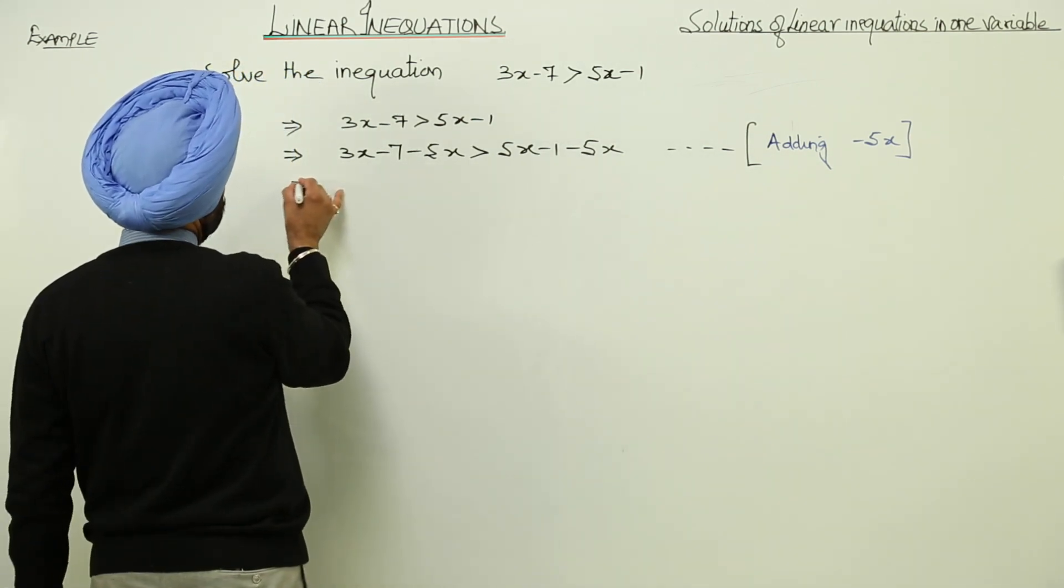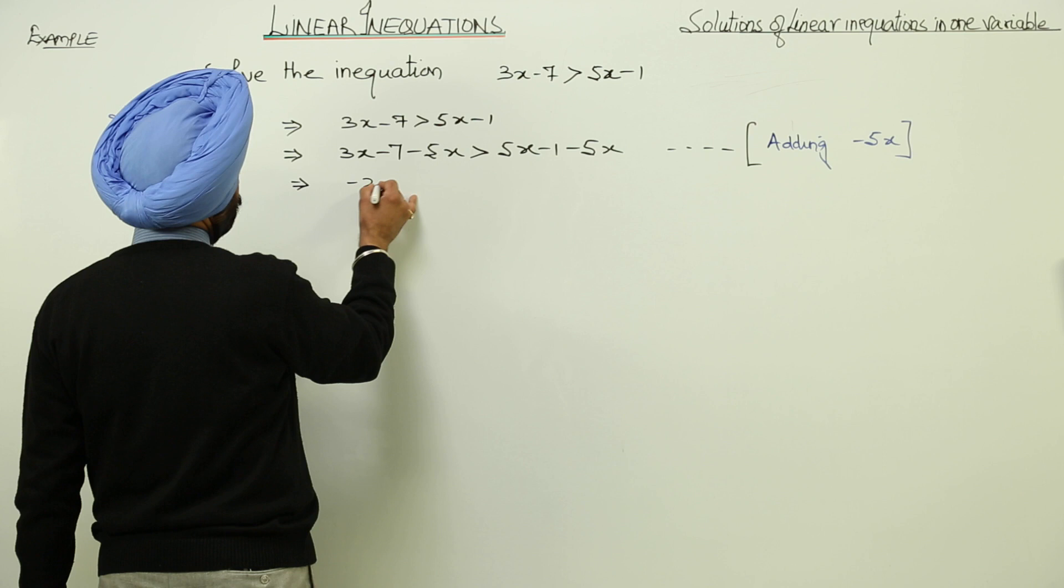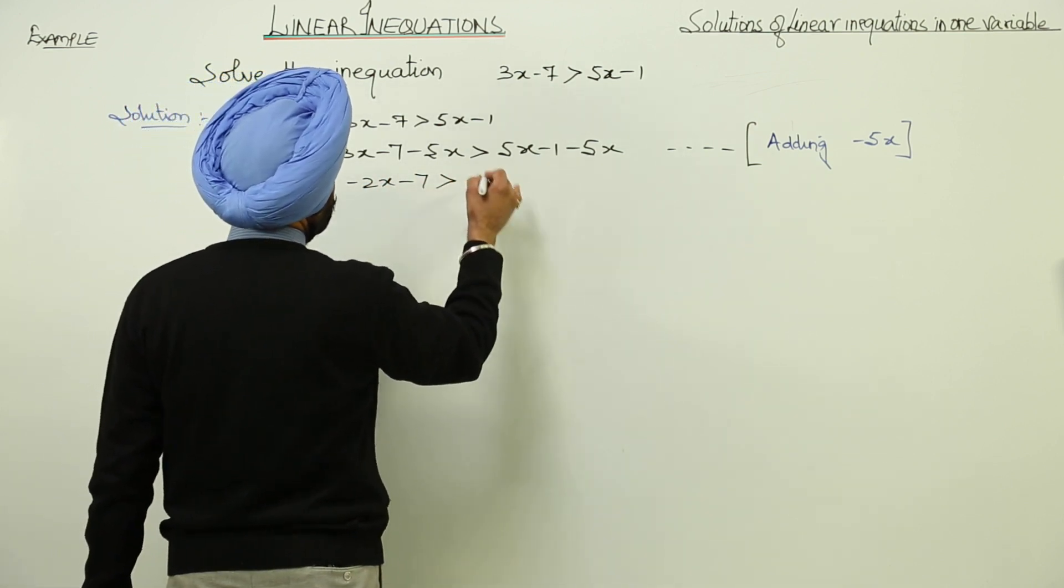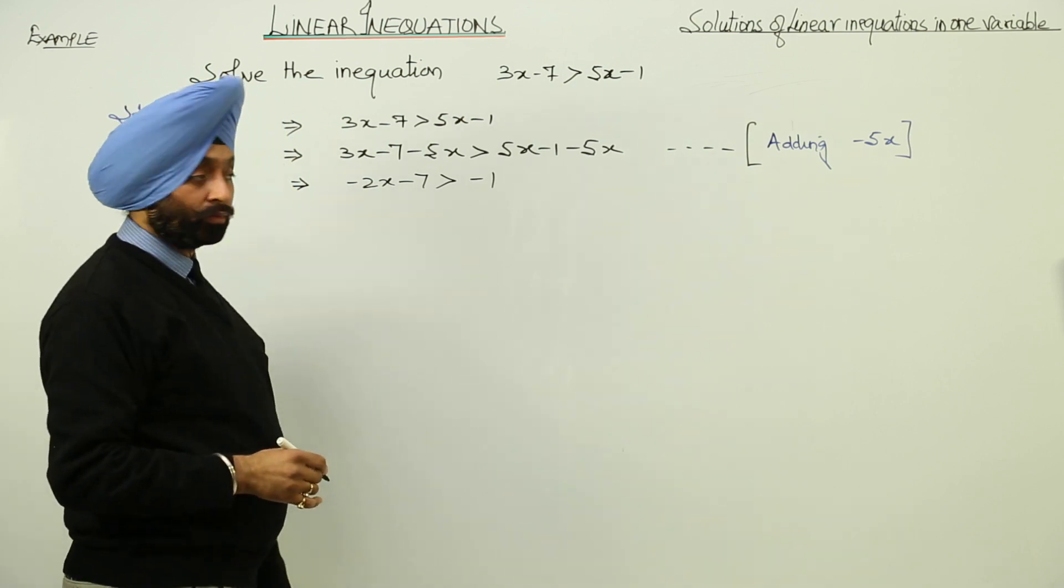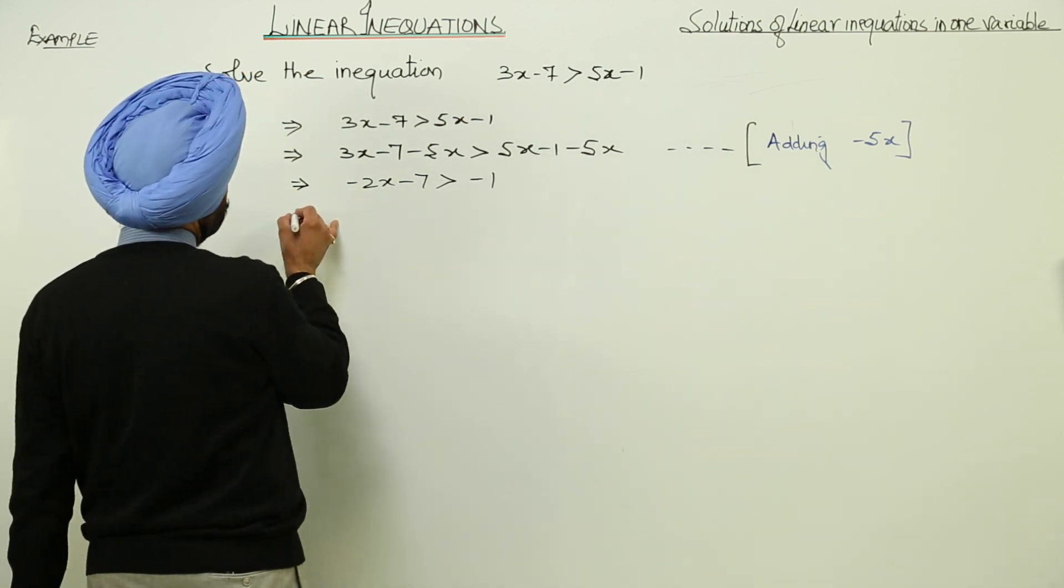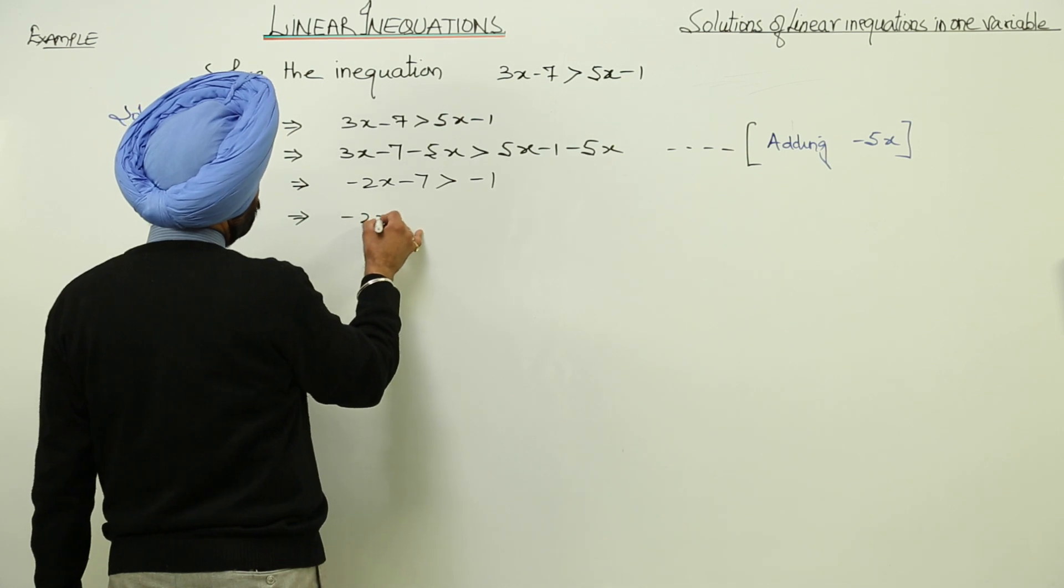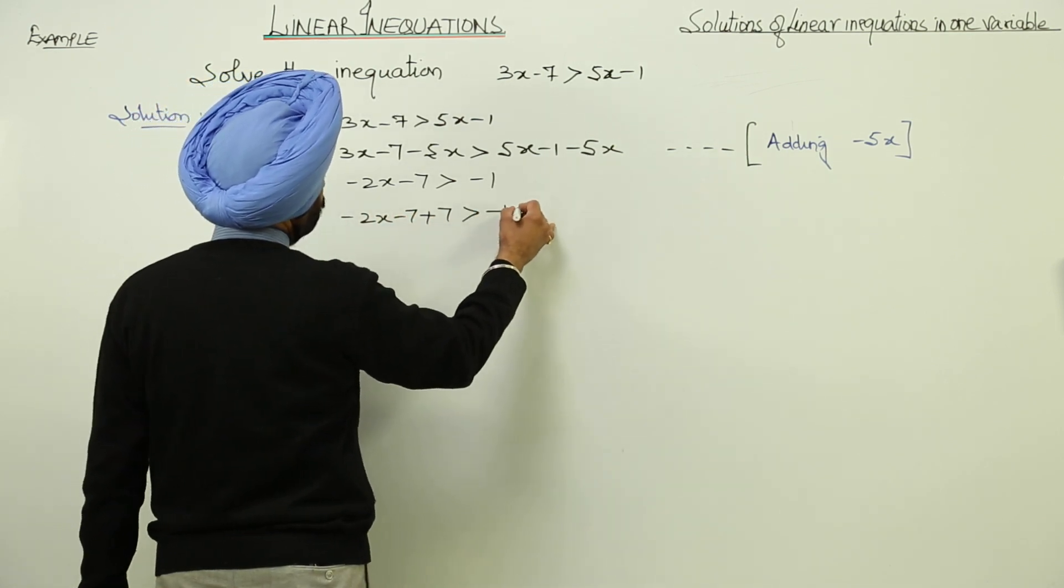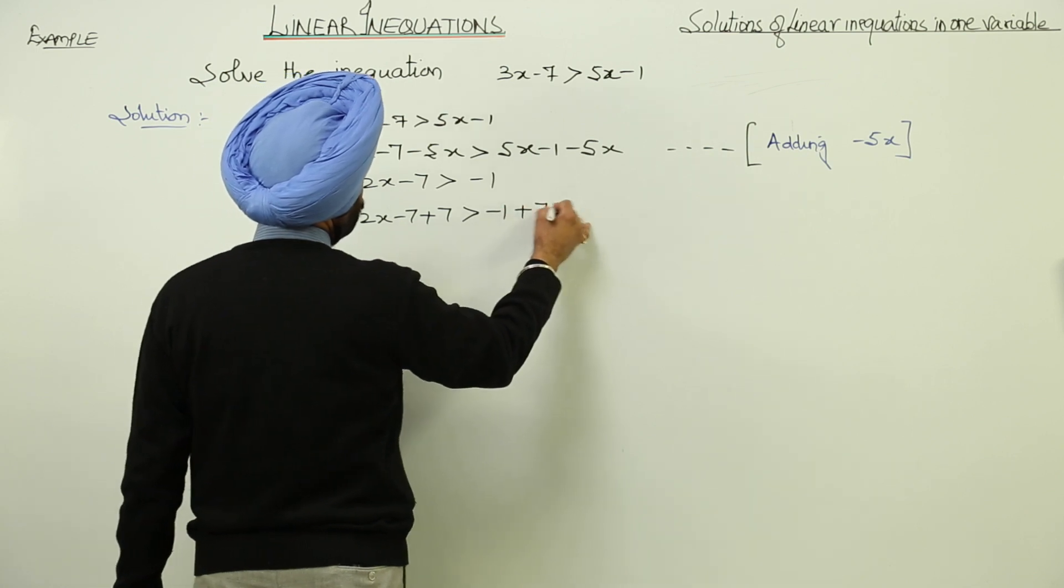Now -2x - 7 > -1. Now -2x - 7 + 7 > -1 + 7.